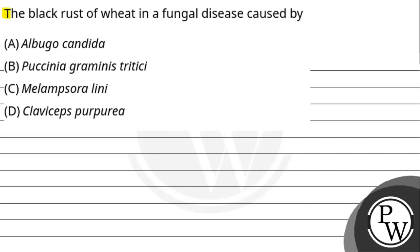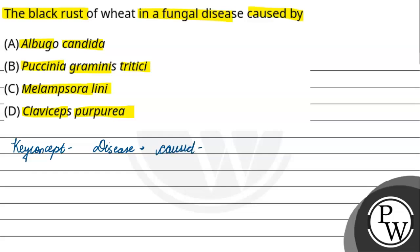Hello, let's read the question. The question here is: black rust of wheat is a fungal disease caused by — options are Albugo candida, Puccinia graminis, Melampsora lini, or Claviceps purpurea. So the concept here is about diseases that are caused by fungi — such diseases that are caused by fungi in the case of plants.